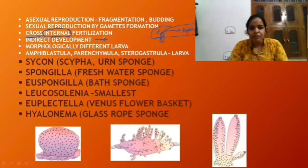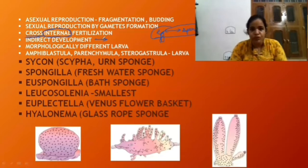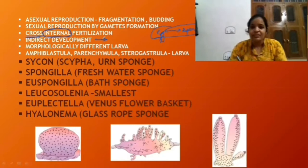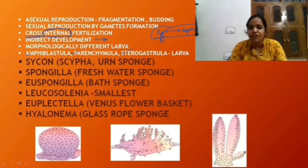Asexual reproduction is seen by fragmentation or budding in Porifera. They have indirect development, meaning in the complete life cycle there is a larval stage where the larva is morphologically different from the adults — just like tadpoles differ from frogs, or caterpillars from butterflies. In Porifera, different types of larvae are found — like amphiblastula, parenchymula, and stereogastrula — which are morphologically different from their adults.